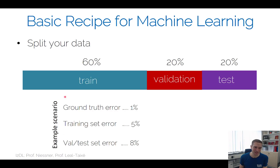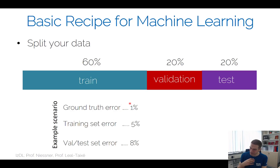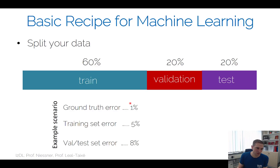The ground truth error might seem surprising, but from a practical perspective, if you ask students to annotate ten million images, at some point they might make mistakes. So your ground truth data is never 100% perfect — there may be outliers. Always consider what dataset you're using and the quality of its labels.